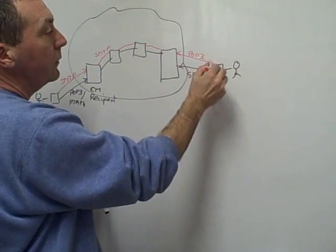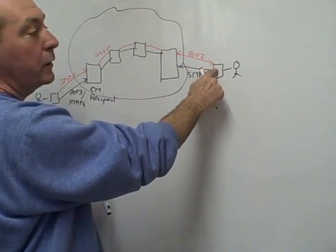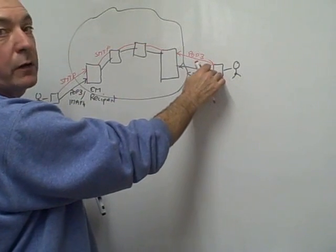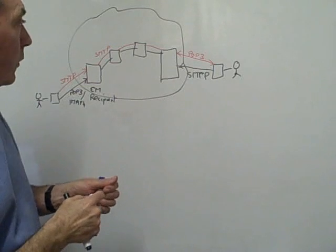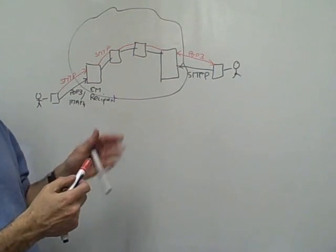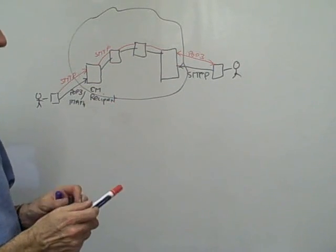This guy now connects to the email server using again POP3 and retrieves his email. The email is sent or retrieved onto this client machine. So now the email is here. Okay, so that's sending and receiving using a standard client like Outlook or Outlook Express.